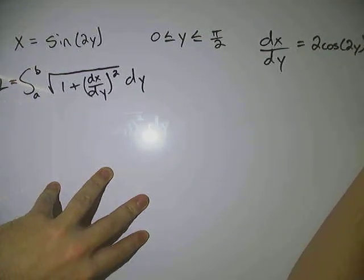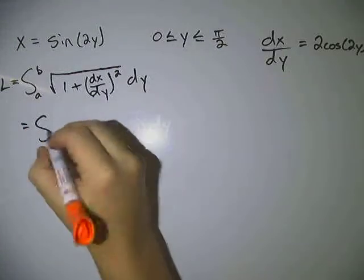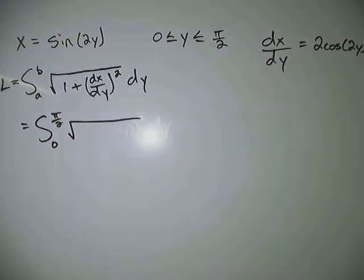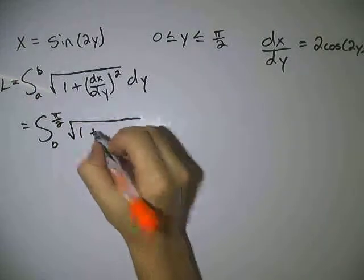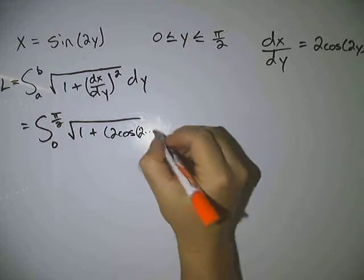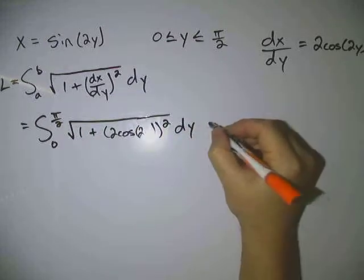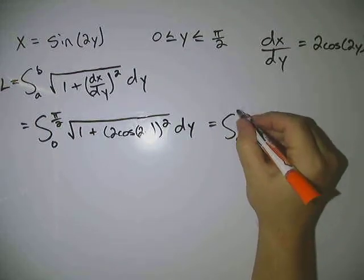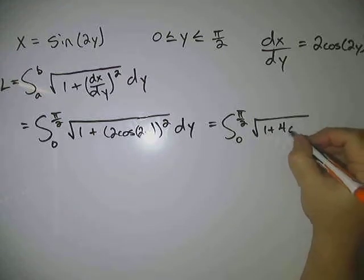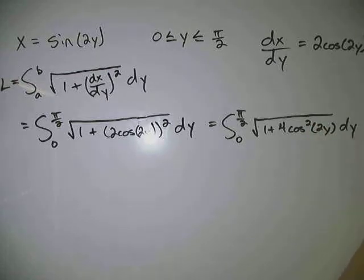That's a little chain rule there. So if we pop that into this formula, we use our intervals of 0 and pi over 2 square root of 1 plus 2 cosine 2y squared dy. If we clean that up a little bit, that would be 0 to pi over 2 square root of 1 plus 4 cosine squared 2y dy.